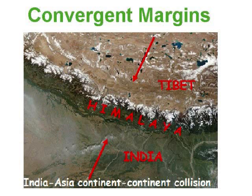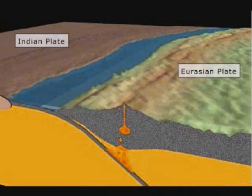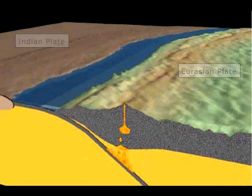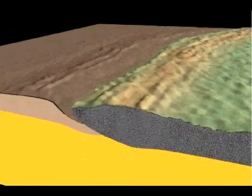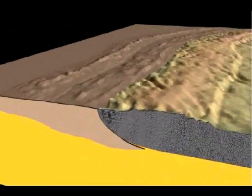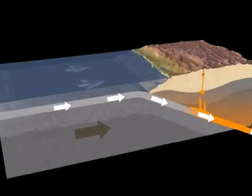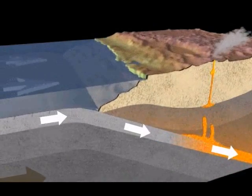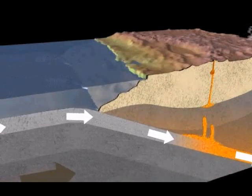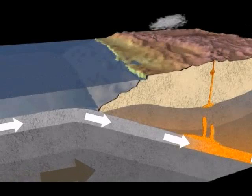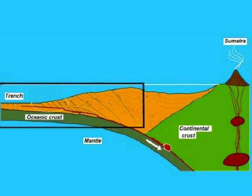Here is another example of convergent plate movement — one plate pushing against another. The Indian continent is moving; it is a separate plate. The Indian plate is slowly being pushed down under the Eurasian plate. The Indian crust is being destroyed while the Eurasian crust is being lifted, creating the Himalayan mountains. The Indian plate movement is a good example of subduction.